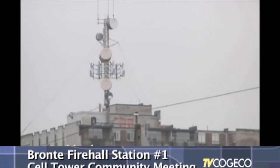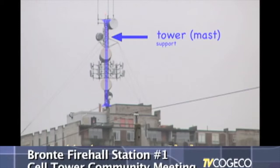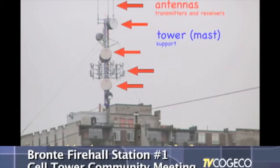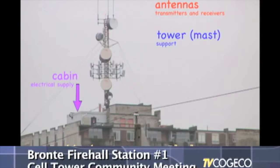This is called a cellular base station, and it consists of a tower that holds the antennas. In Europe, they call it a mast, so that's how you might see it in the literature. This particular one has quite a few antennas on it, and it's in Toronto, by the way. The third part of one of these cellular base stations is the cabin that contains the electrical supply.